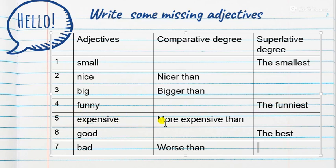You have to focus on this. For two or more syllables, example expensive, you have to put here "more expensive than" and superlative degree "the most." Good and bad are irregular adjectives, so they have to change otherwise.